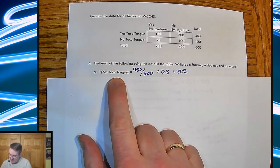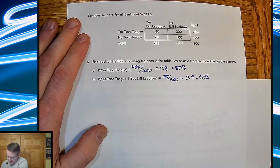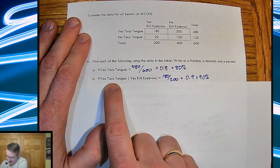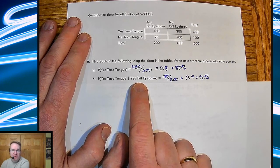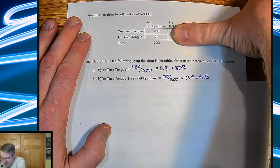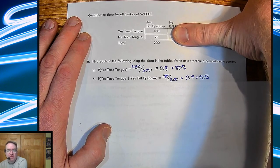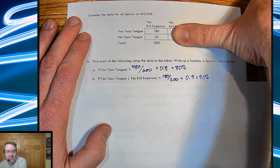So probability that you can yes, taco tongue. 480 out of 600. So that's 80%. Probability that I can taco tongue if I can do the evil eyebrow. So this is my condition. So that means I'm blocking out those. So that's going to be 180 out of 200. So that's 90%.